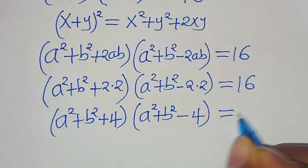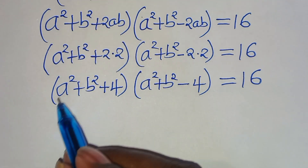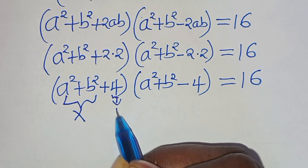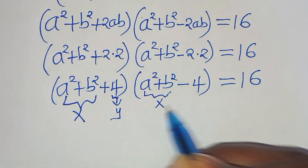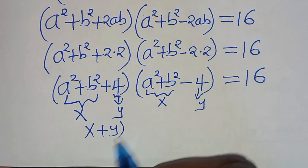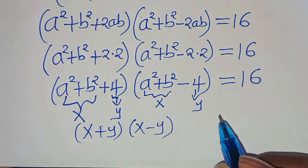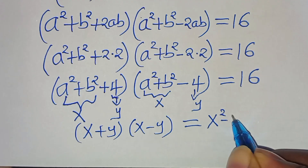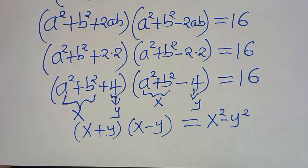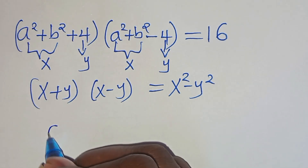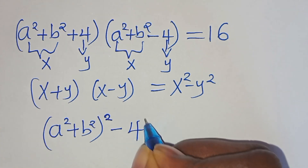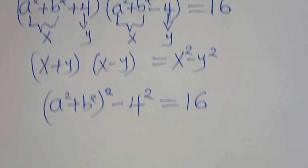Let x equal a squared plus b squared and y equal 4. Then the expression becomes x plus y times x minus y, which equals x squared minus y squared. Applying this identity, we get a squared plus b squared raised to the power of 2, minus 4 squared, equals 16.